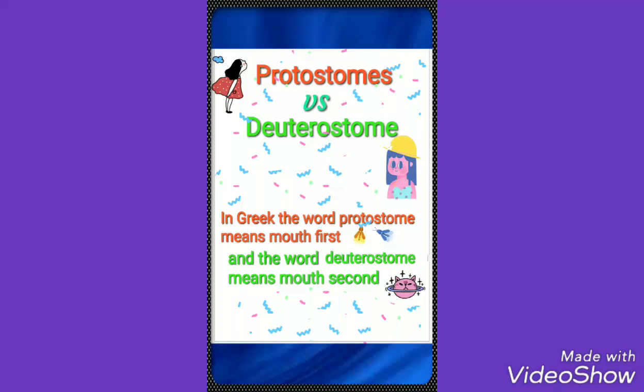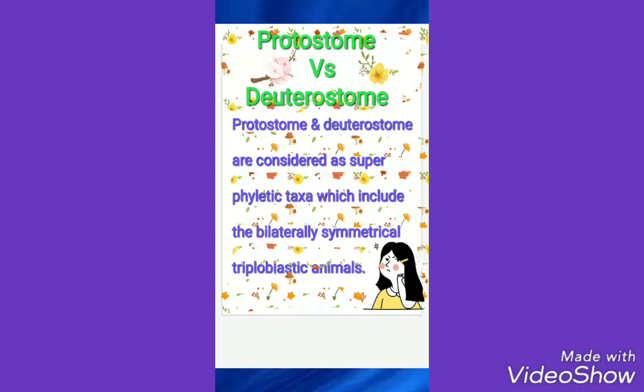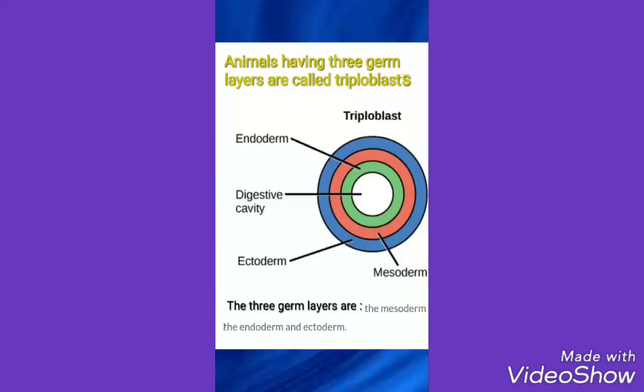Protostomes and deuterostomes are both considered as the super-phyla taxa, which include the bilaterally symmetrical triploblastic animals. Triploblastic animals are the animals which have three germ layers: the ectoderm, the endoderm, and the mesoderm. These are known as triploblastic animals.